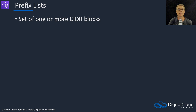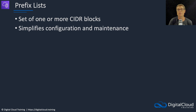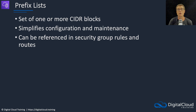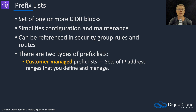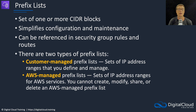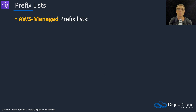Next, we have prefix lists. These are a set of one or more CIDR blocks used for simplifying the configuration and maintenance of route tables and security groups. You can reference prefix lists in your security group rules and in routes within your route tables. There are two types: customer-managed prefix lists, which are sets of IP ranges that you define and manage, and AWS-managed prefix lists, which are for specific AWS services and cannot be modified.